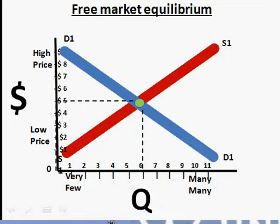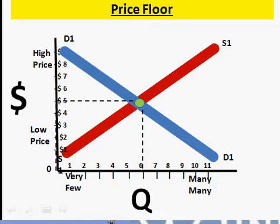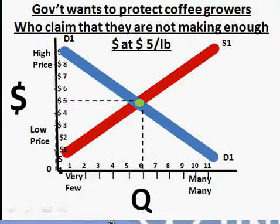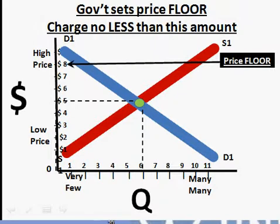We start off with supply and demand being in equilibrium, and we have a situation where the government establishes a price floor. For whatever reason, the government wants to protect coffee growers who wish to make more money per pound of coffee than the five dollars per pound that the free market equilibrium provides. So the farmers have lobbied the government, and the government establishes a price floor of eight dollars.